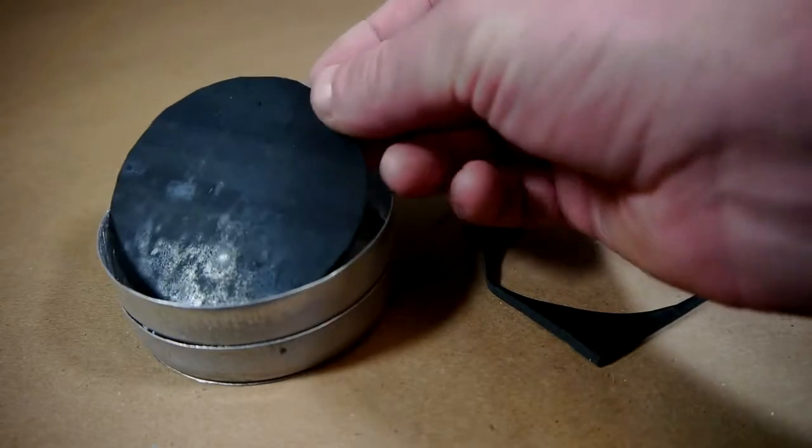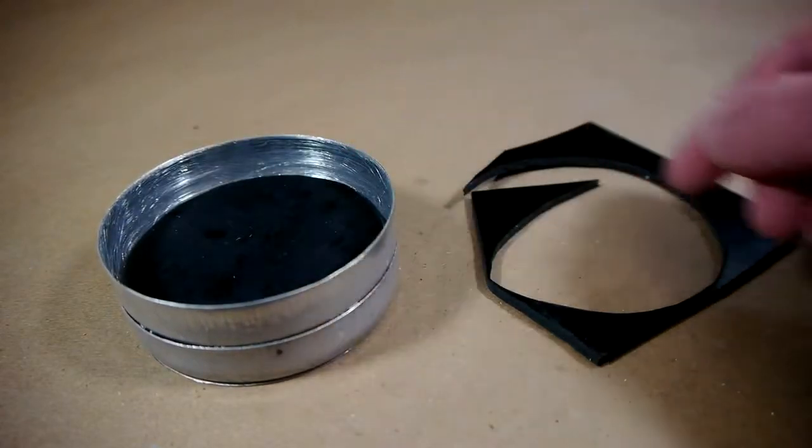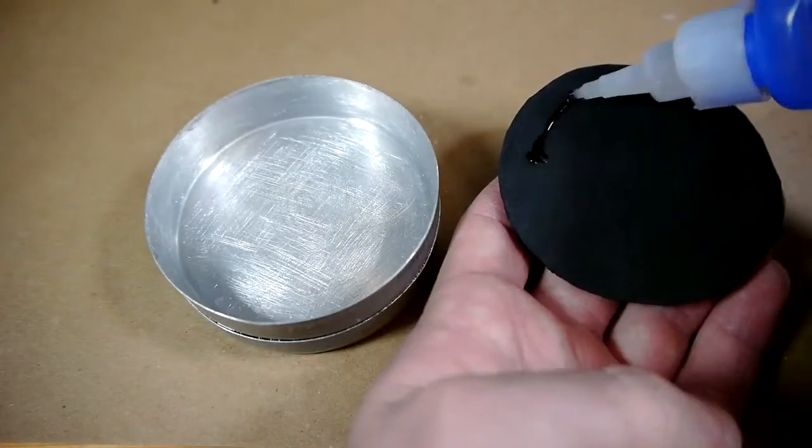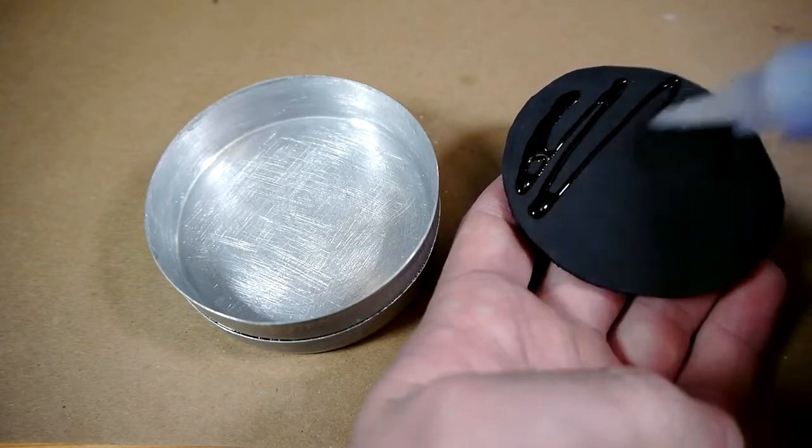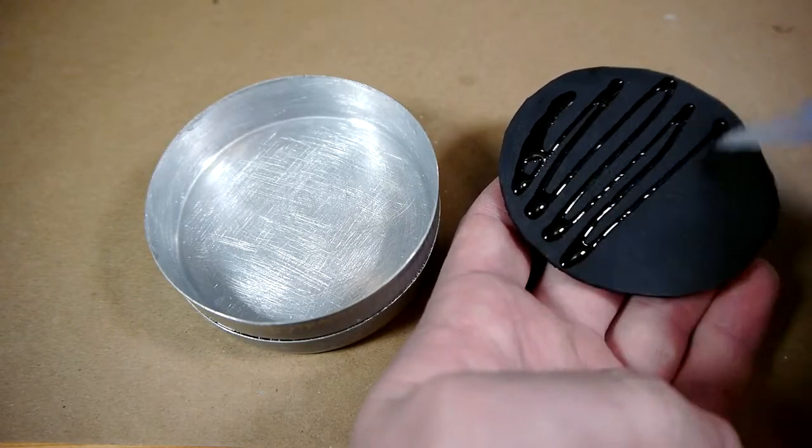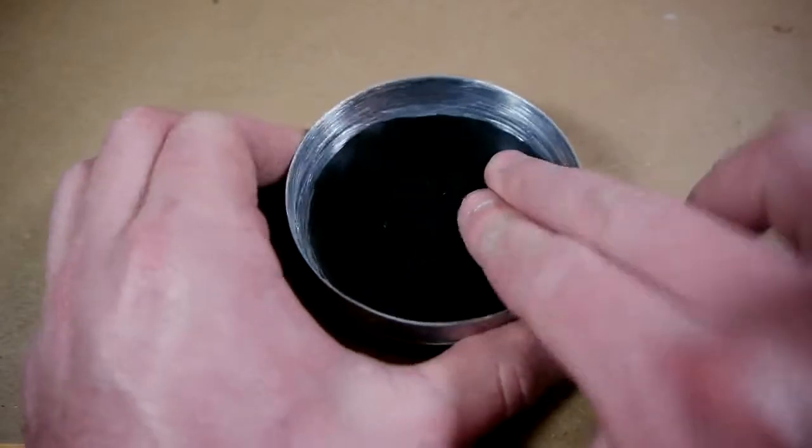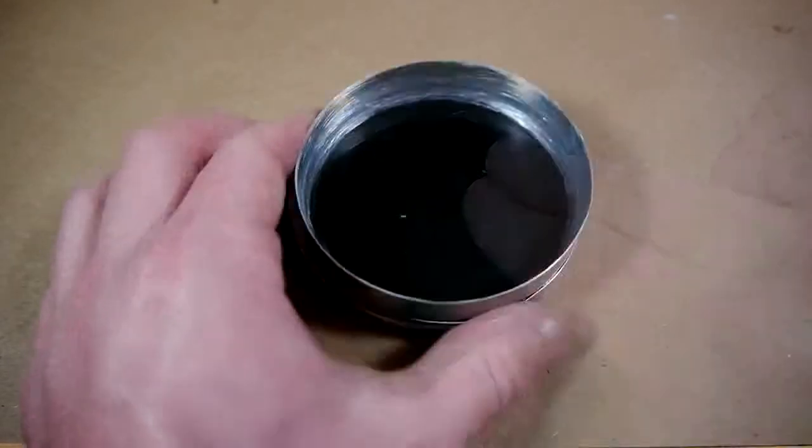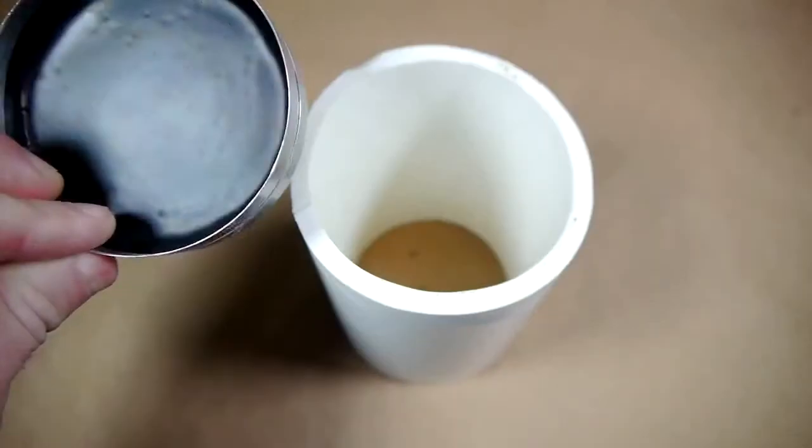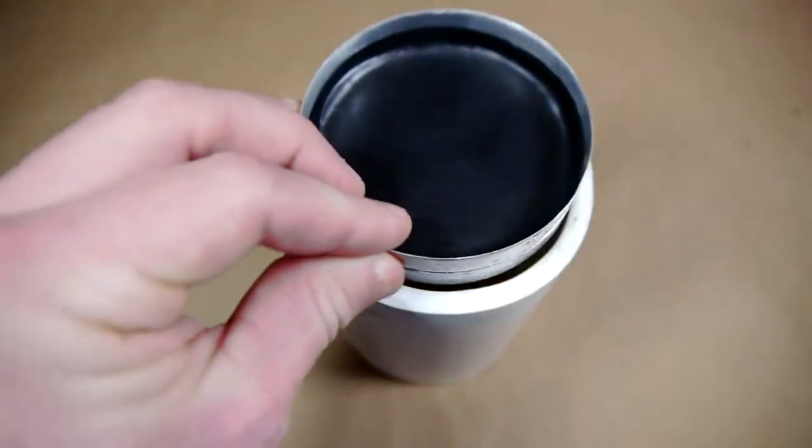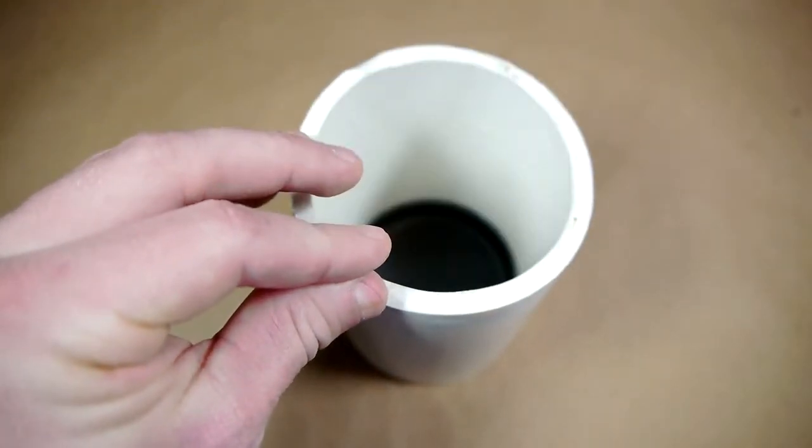A large rubber washer or a 3 inch diameter circle cut out of a piece of sheet rubber is now glued onto the face of the piston using super glue. This rubber will be what creates an air tight seal against the face of the barrel.